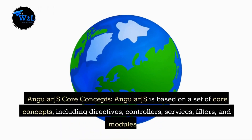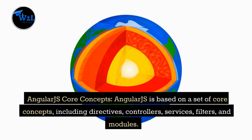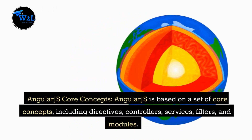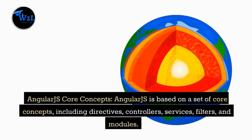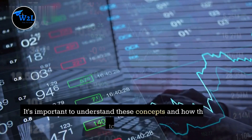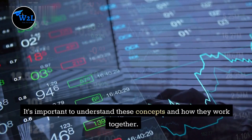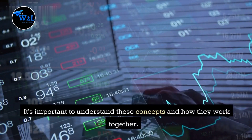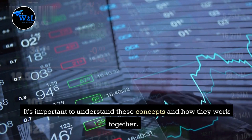AngularJS Core Concepts: AngularJS is based on a set of core concepts, including directives, controllers, services, filters, and modules. It's important to understand these concepts and how they work together.